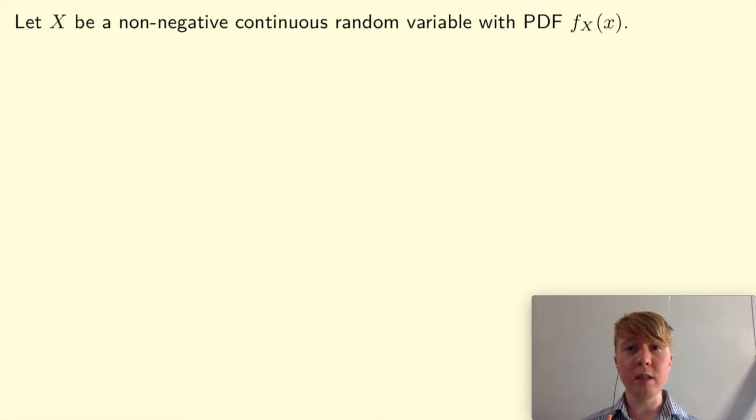To get started, we'll look at this in the case where you've got a PDF, and we'll look at the more general version using measure theory at the end, briefly. So you need a non-negative continuous random variable, and say its PDF is this function fx of x.